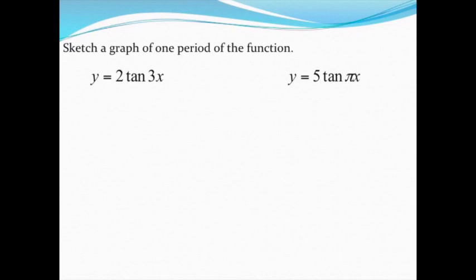To graph one period of a tangent function, I'm going to begin by finding the period of the tangent function. To find the period, I'm going to take the normal period of a tangent function, which is pi, not 2pi like it was for a sine or cosine graph, and divide it by the b value.